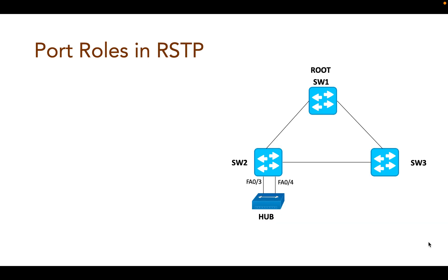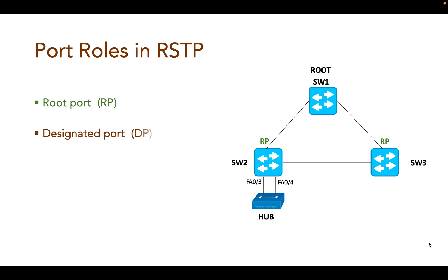Let's go ahead and look at RSTP port roles. RSTP defines different port roles as follows. Starting with root port: a forwarding port that is the closest to the root bridge in terms of path cost. Then we have designated port: a forwarding port for every LAN segment.